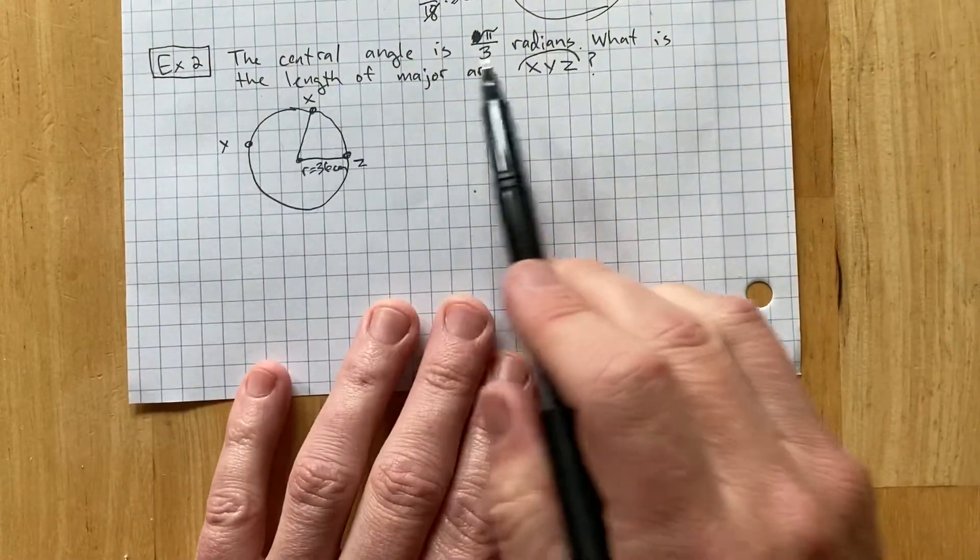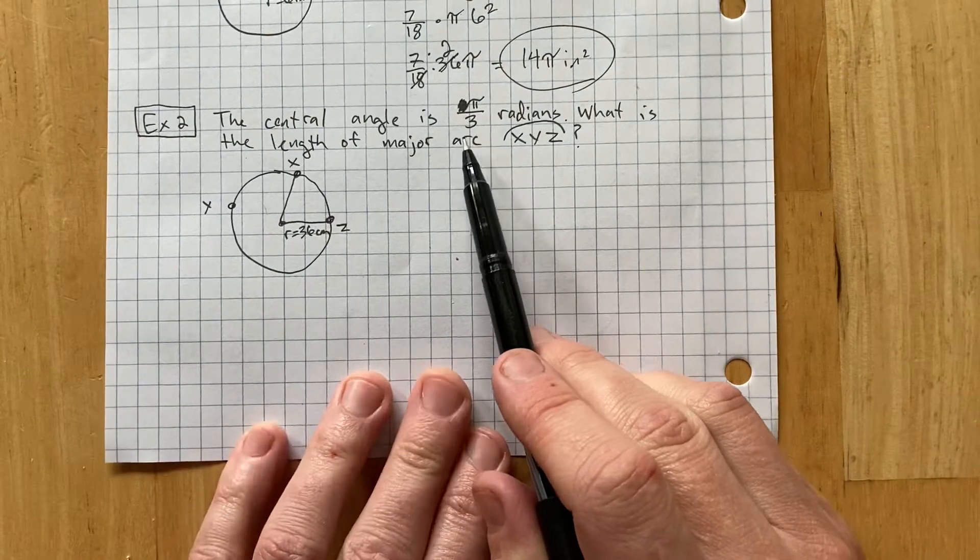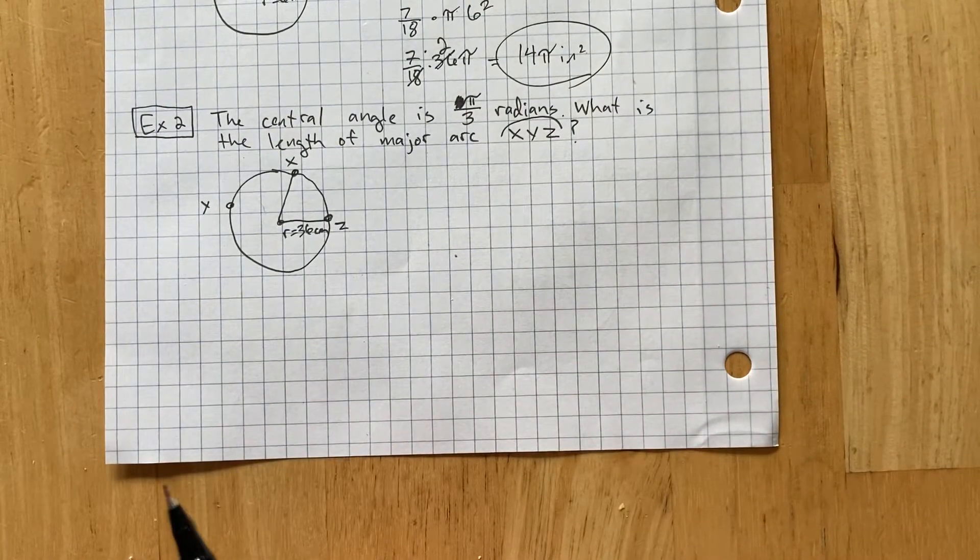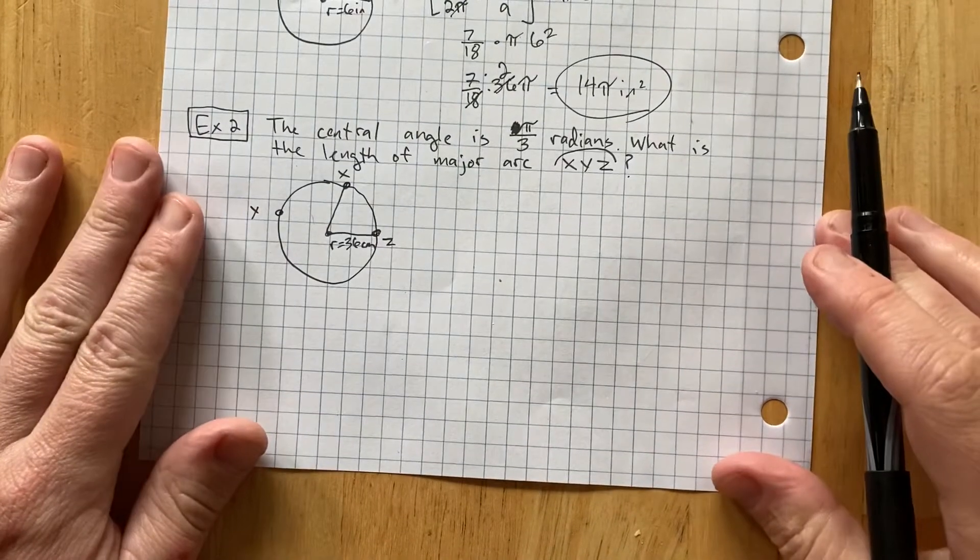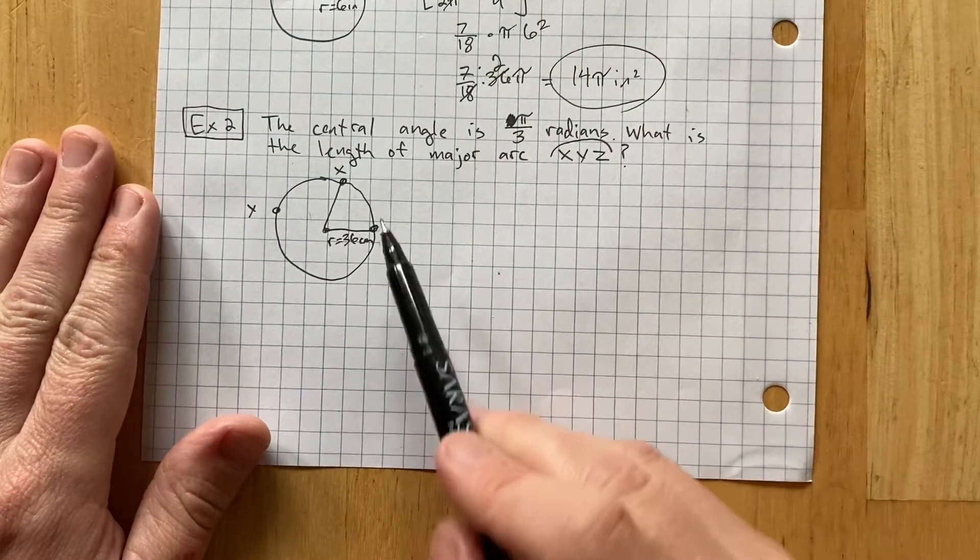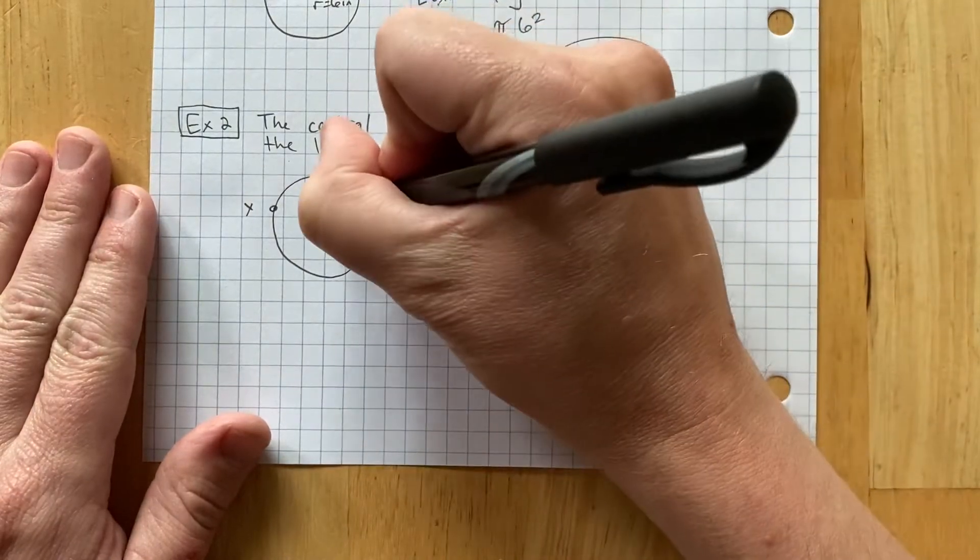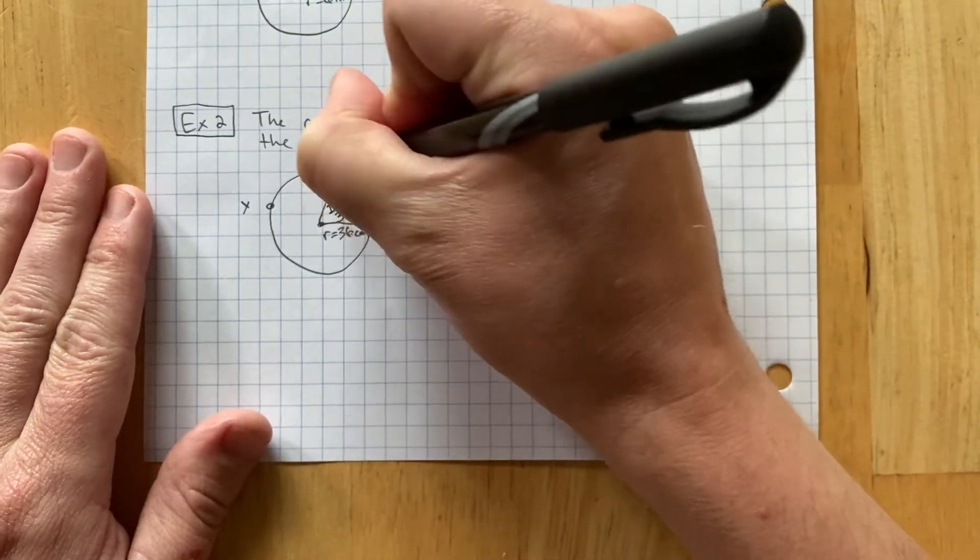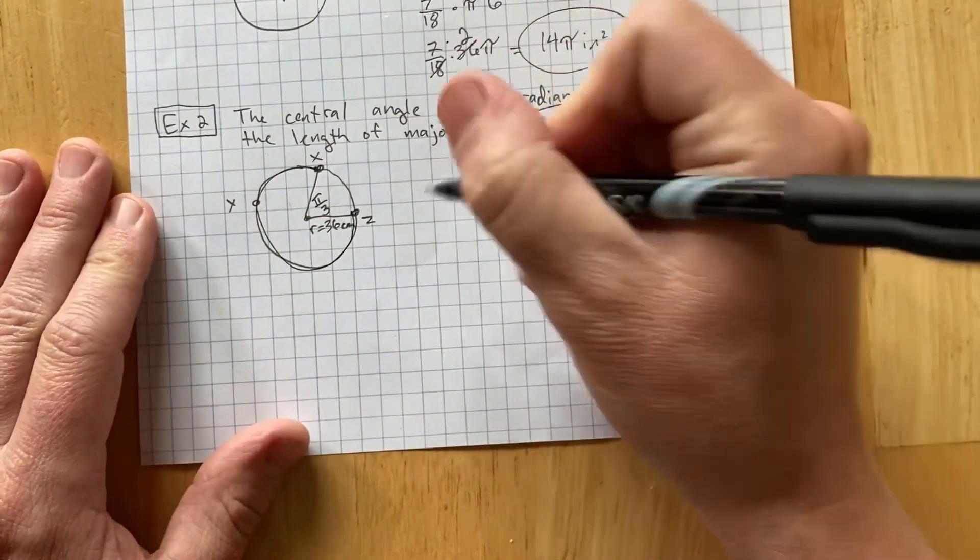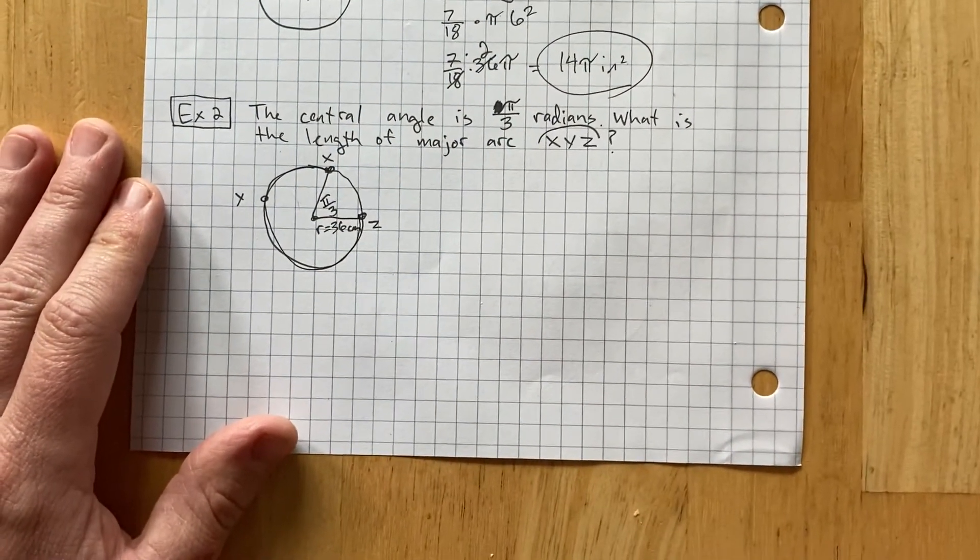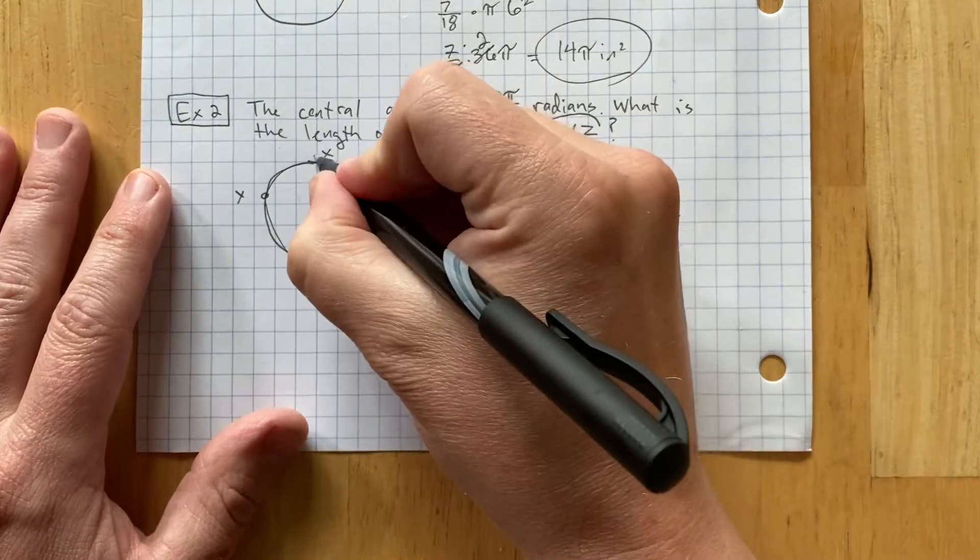So, let's do this one. The central angle is pi over 3 radians. What is the length of major arc XYZ? XYZ is all the way around the circle this way. But the pi over 3 is over here. So, the trick is to then figure out, I'm supposed to actually do not 1 over 2 pi times pi over 3, but times the rest of it.